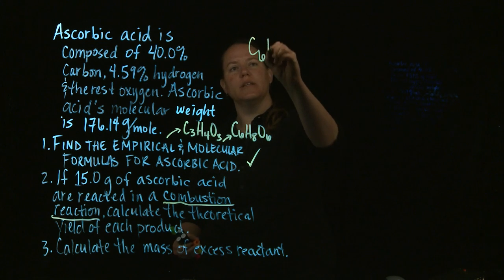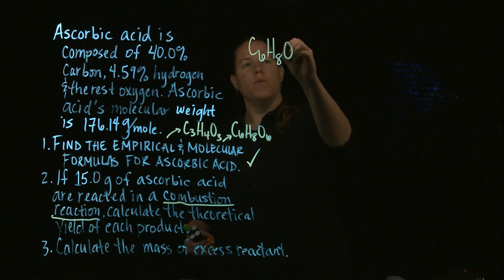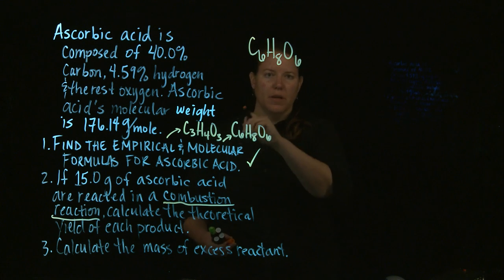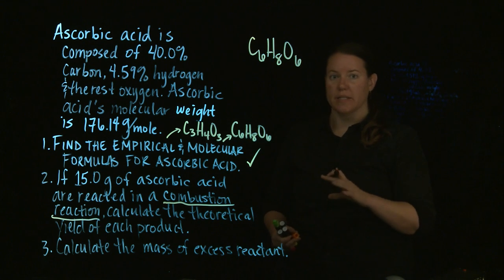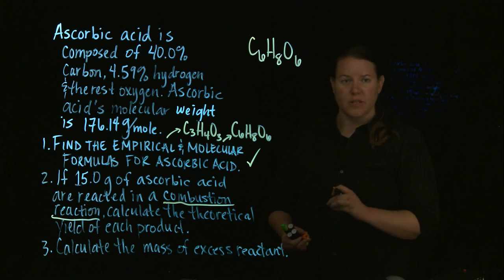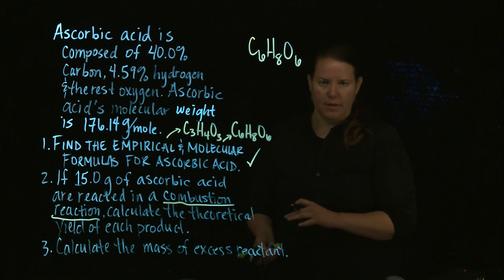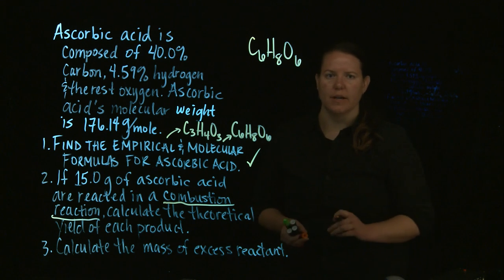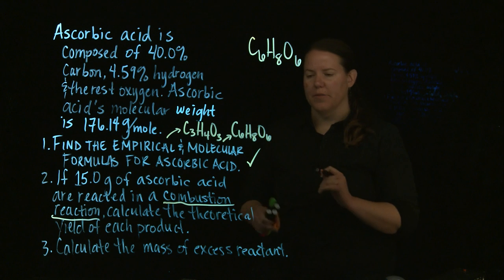Alright, so let's take ascorbic acid. When we take ascorbic acid, we have to take the molecular formula. That's how ascorbic acid comes. It's a molecule that has six C's, eight H's in terms of atoms, six C atoms, eight H atoms, and six oxygen atoms somehow combined together.